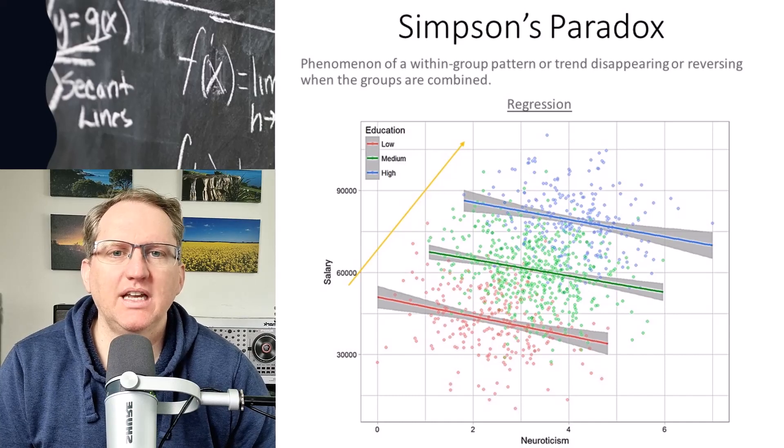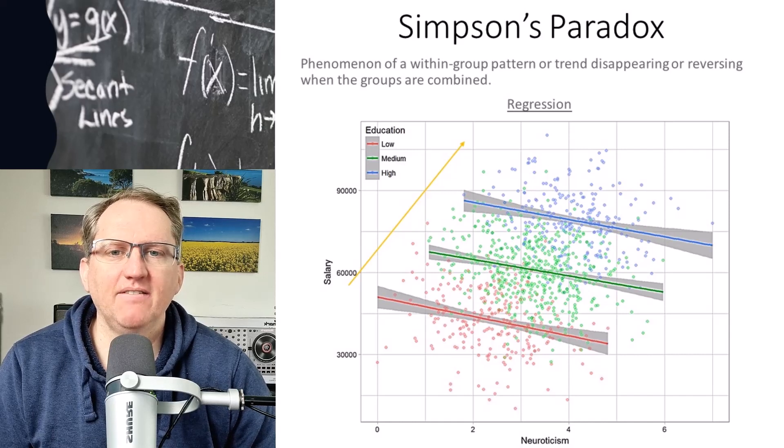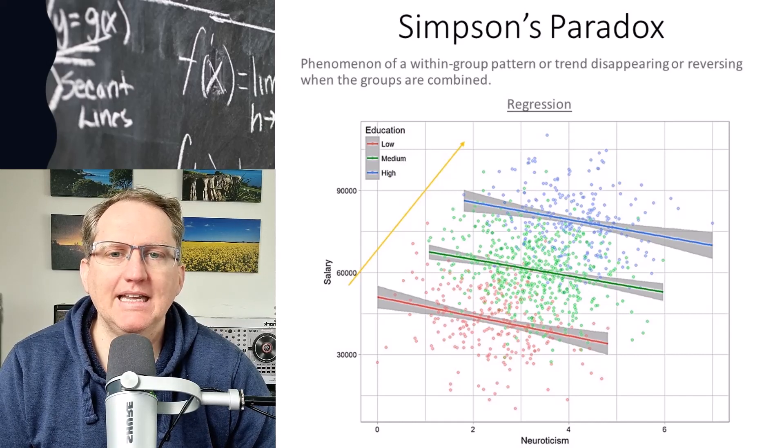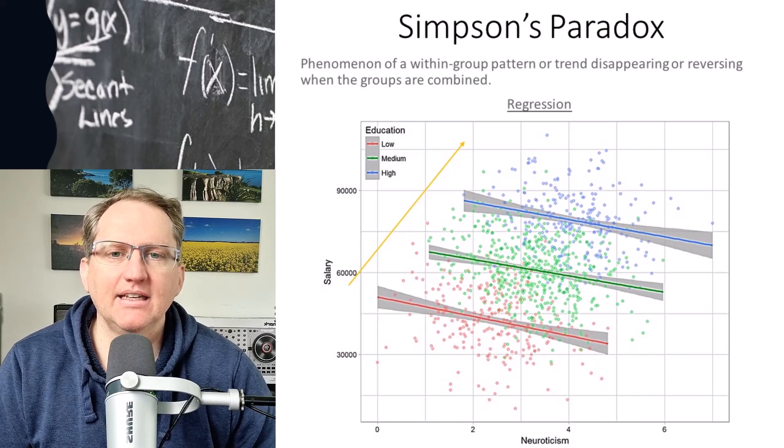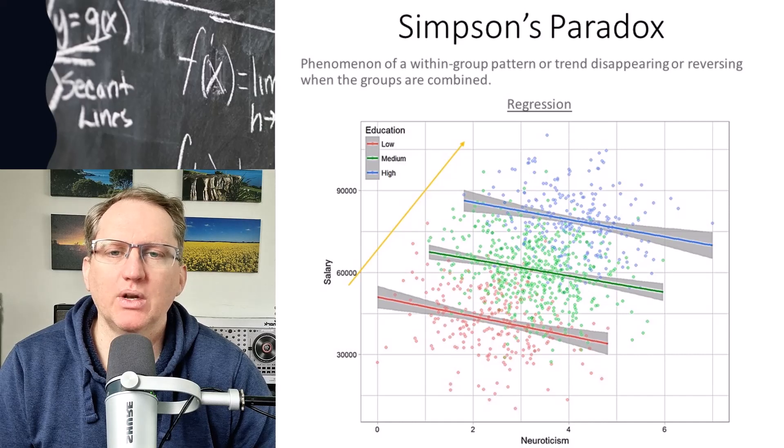Hi friends, today I wanted to tell you about what's called Simpson's paradox. This is a really important phenomenon to know about because it comes up quite often in data and it can lead to making incorrect conclusions in your modeling.